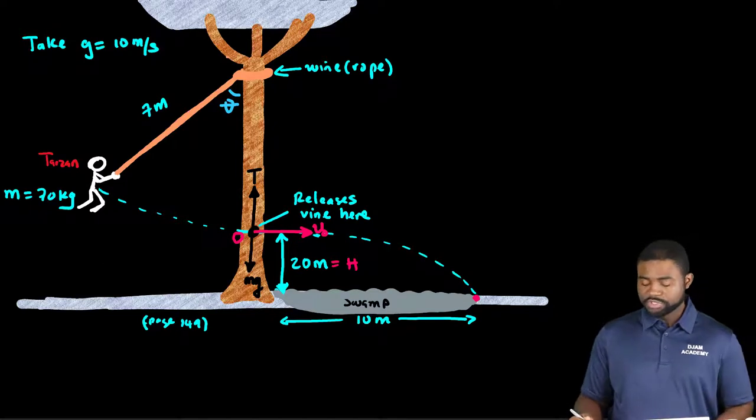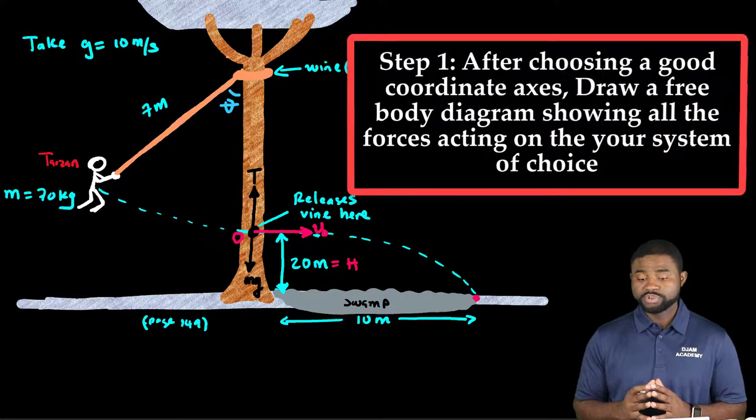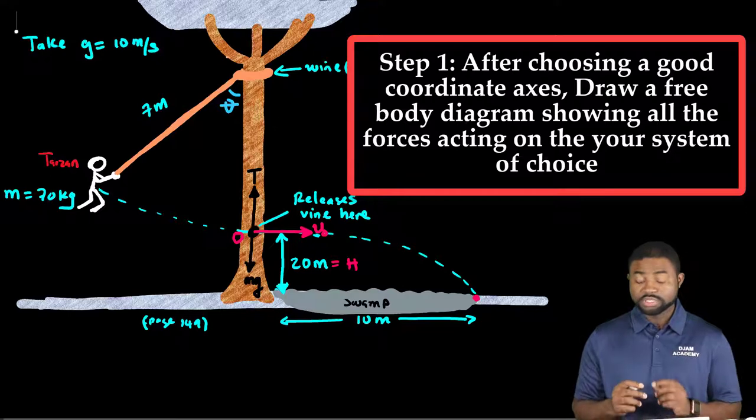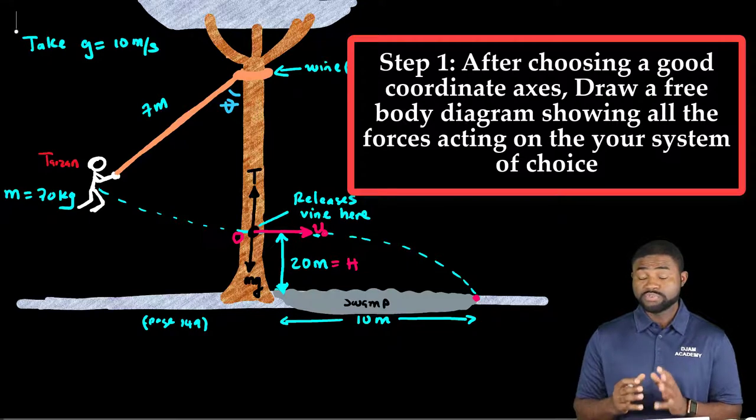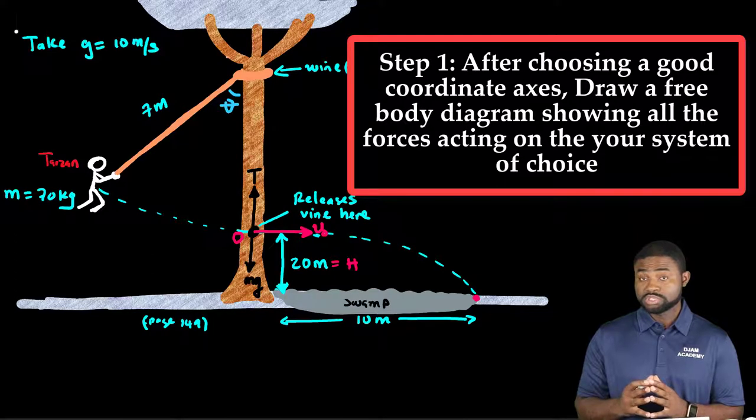The very first thing that we have to do whenever we are given a problem like this is to draw a free body diagram. A free body diagram is a diagram that only shows the forces acting on the body. It doesn't show the forces asserted by the object.